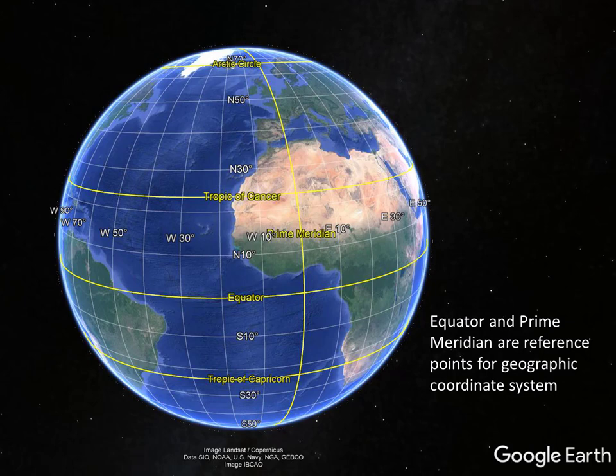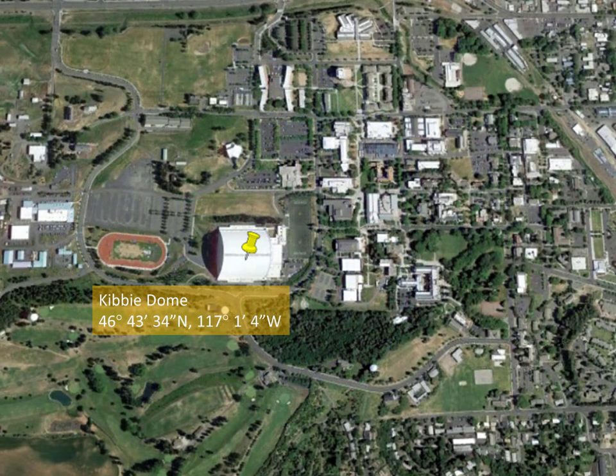We have a system for locating things on the planet using angles expressed as degrees. But a degree is pretty big — one degree of latitude is about 69 miles — so we either need to work with fractions of degrees or we need smaller units. The smaller units we typically use are minutes and seconds. A degree is divided into 60 minutes, and a minute is divided into 60 seconds. A minute of latitude is about 1.15 miles, and a second of latitude is about 100 feet, so we can get down to about 100-foot accuracy. Let's check out a map and look at the coordinate for the Kibbe Dome on the University of Idaho campus.